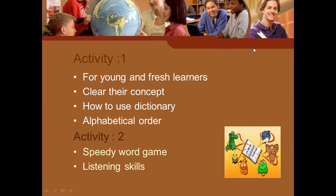She introduces dictionary-based classroom activities, noting that language classes have all kinds of age groups and different levels, so activities should be prepared according to students' level. The first activity is alphabetical order: give each student some letters, tell them to arrange these in order, then take them to the dictionary to look up alphabetical orders. This helps them find words — for example, searching 'come' by looking up C-O-M. This activity is for young learners.